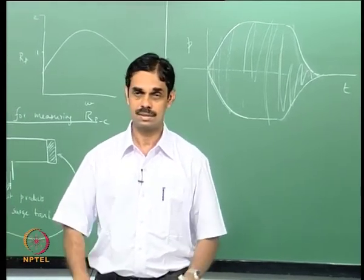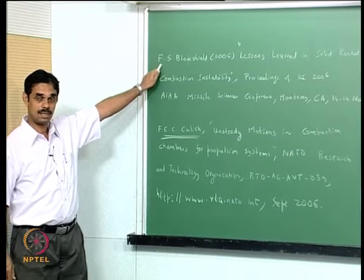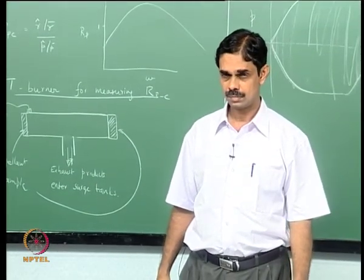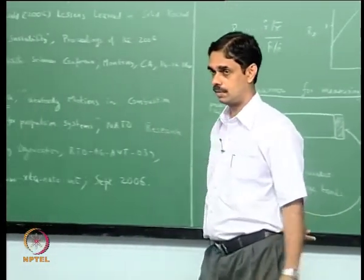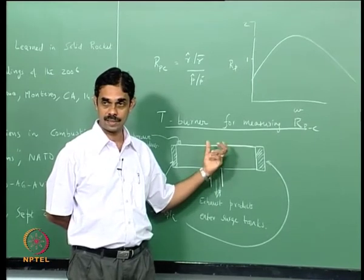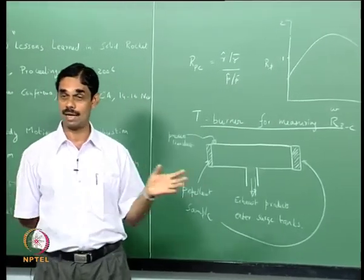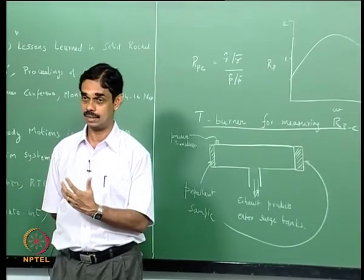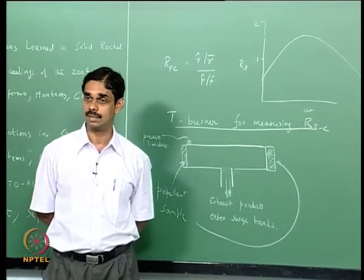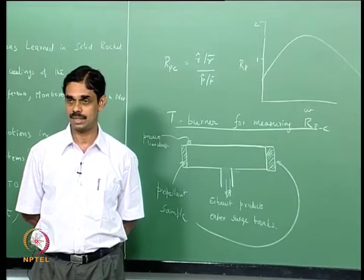If anyone is interested, there is a PhD thesis on this and the Blomeshield paper gives nice references about T burners which you can get from the web. A valid question is that once the burning is completed the temperature might change, so the natural frequency will change. You may have to do experiments at various lengths, determine alpha-1 minus alpha-2 at various frequencies, and then alpha-2 from a corresponding experiment may need some correction because the temperature changes.